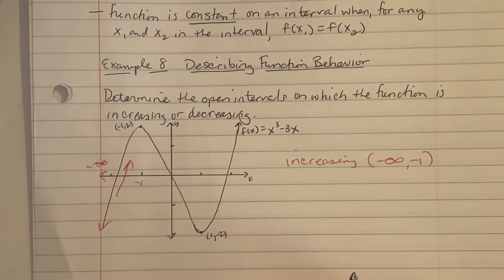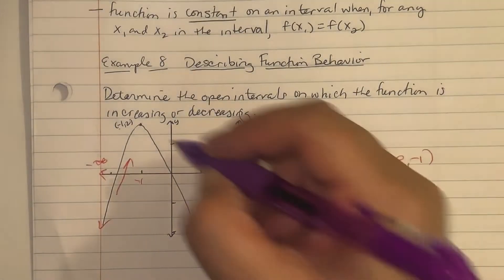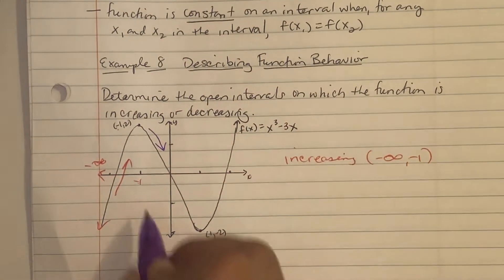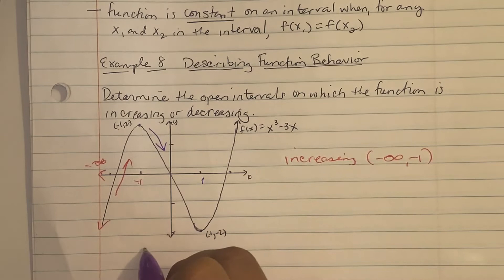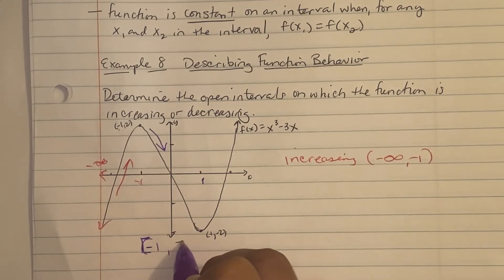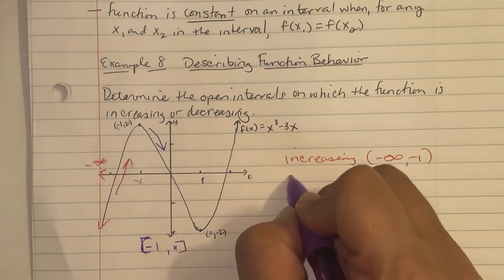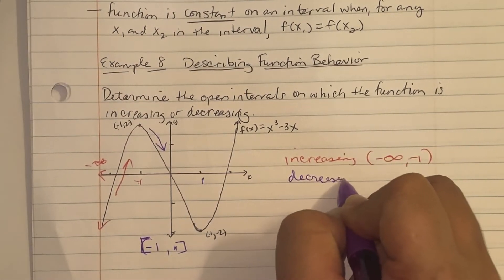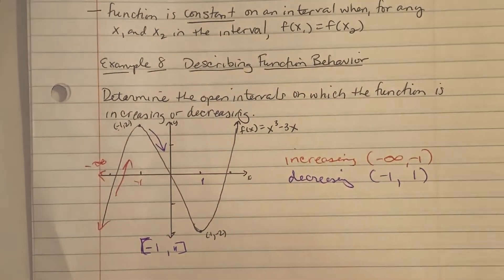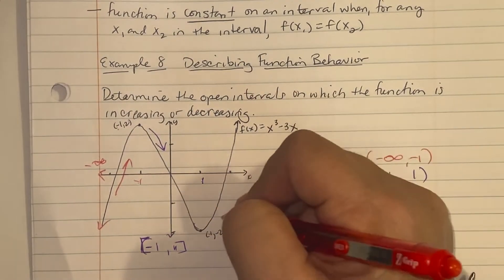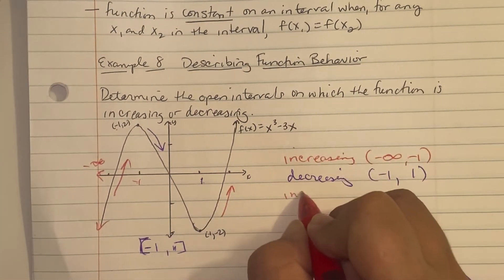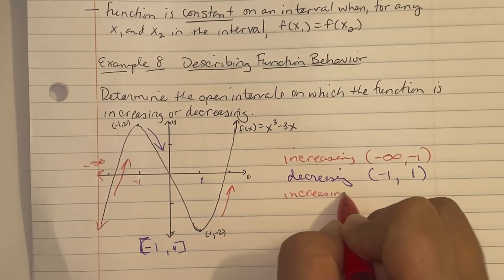Then the graph turns and decreases between the intervals of negative one and positive one — so it is decreasing from negative one to one. Then it turns upward again from positive one to infinity, so it is increasing from one to infinity.